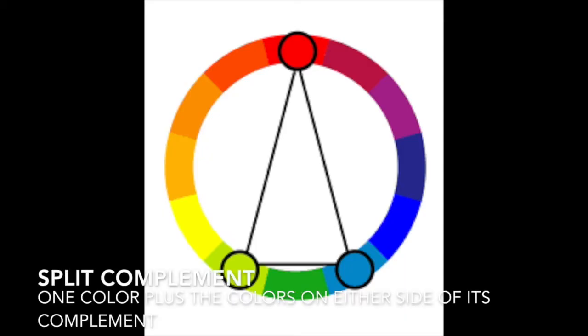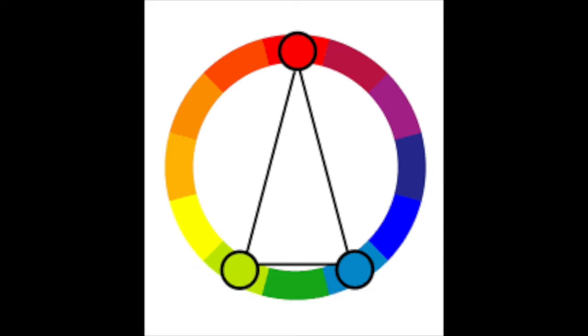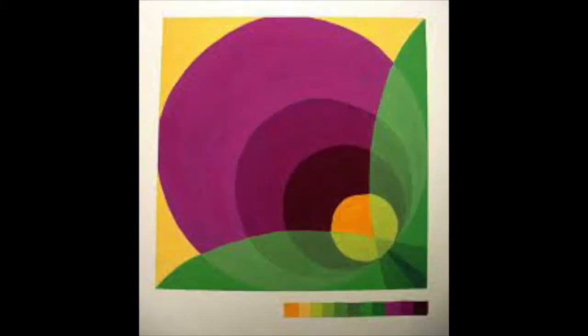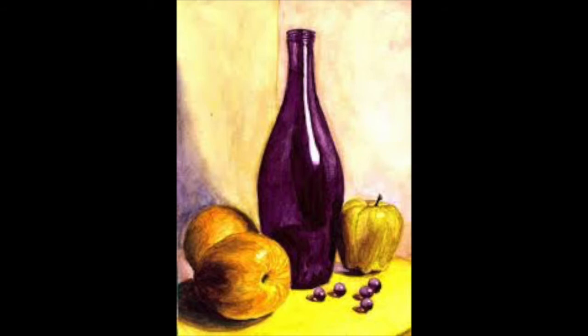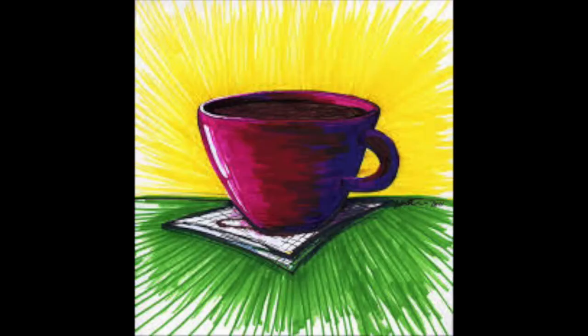Next up we have split complementary. This takes one color and then the colors that are on either side of its complement — so for example, red and then yellow-green and blue-green. Split complementary is a little bit more versatile to use because you get that high contrast feeling without the intensity of straight complementary colors.